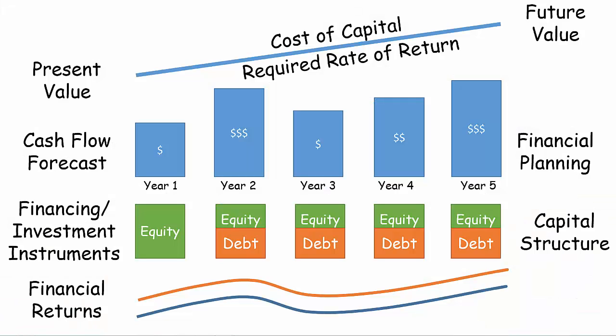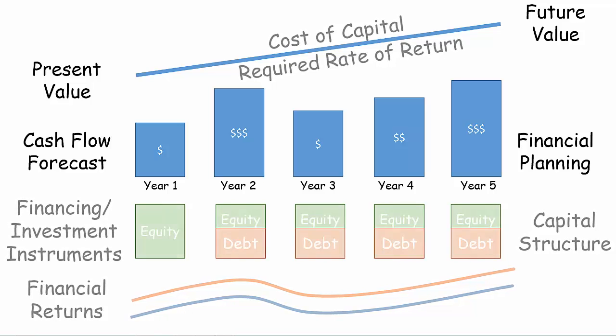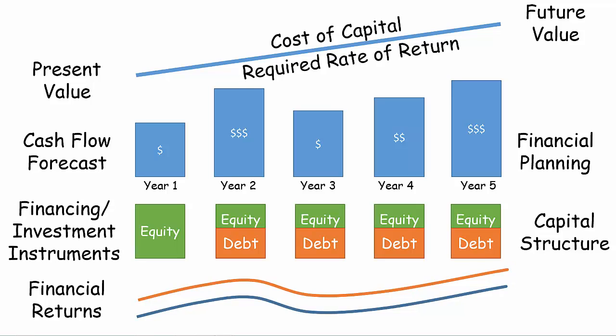Returning to a conceptual model of this course, in this lesson we will look at the various financing and investment instruments. Companies issue these instruments to investors to raise capital to grow their business. Companies have the objective of minimizing their cost of capital, and they do so by optimizing their capital structure. Capital structure refers to the mix of debt and equity instruments they issue.